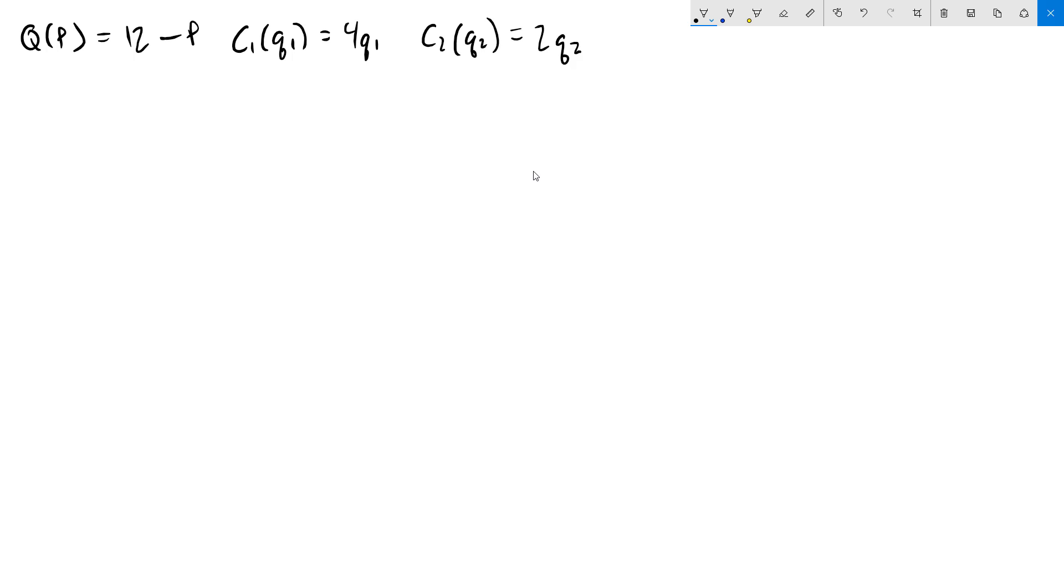I've written out our given information. We have our demand function, q of p equals 12 minus p, and our two cost functions, c1 of q1 equals 4q1, and c2 of q2 equals 2q2. Since the problem stated that our two firms are quantity setters, that means that we have a Cournot oligopoly model. Since the firms set quantities, we need to get the entire problem in terms of the quantities.